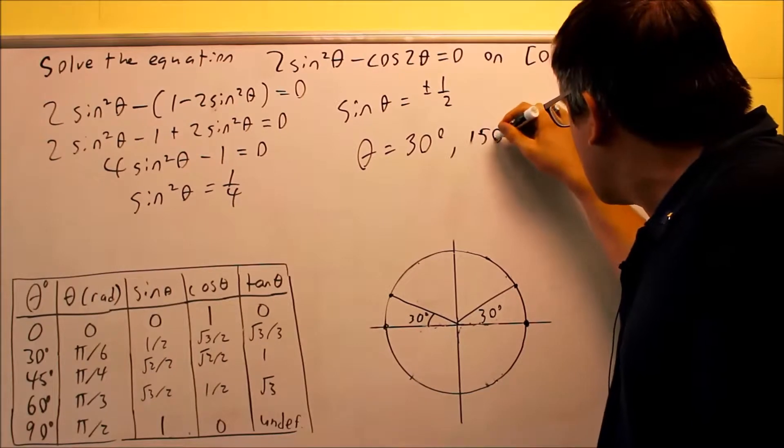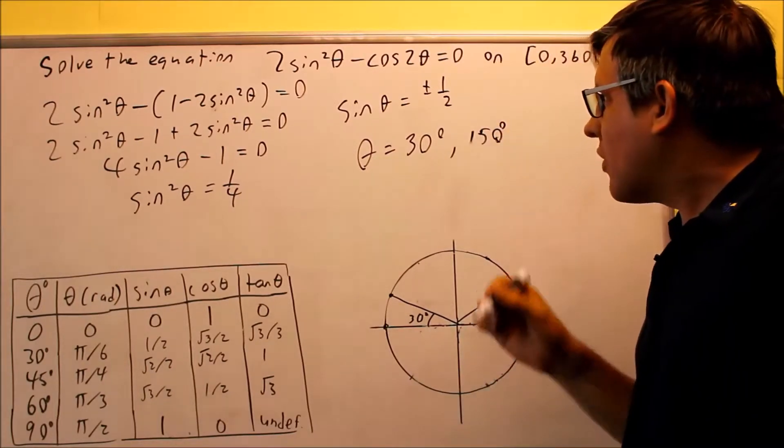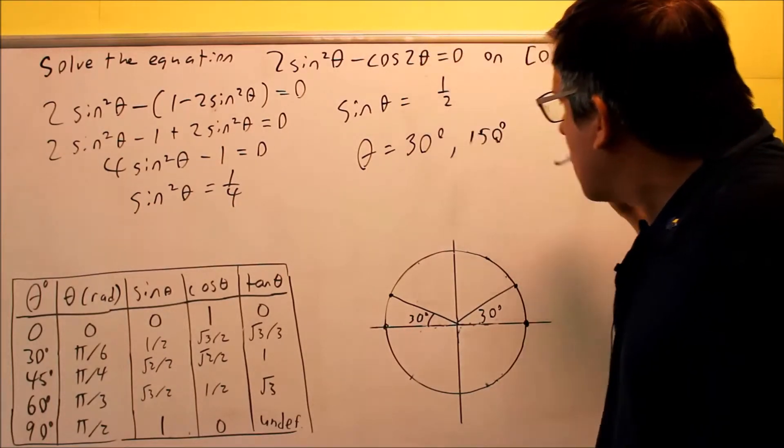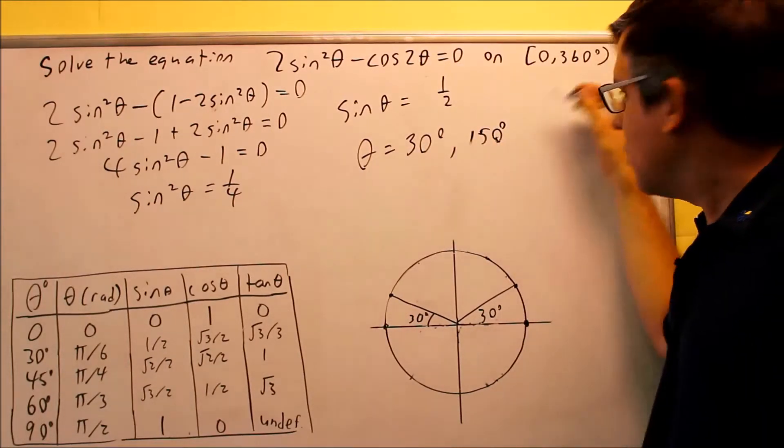We're going to do 180 minus 30 gives us 150. These two would be the two answers for sine of theta equals positive one-half. Here's one sine of theta equals one-half, we get these two solutions.